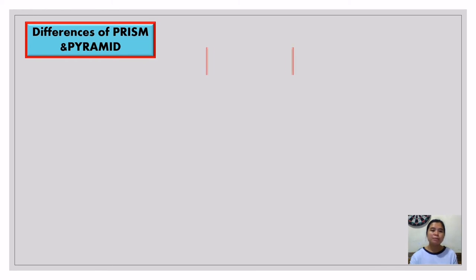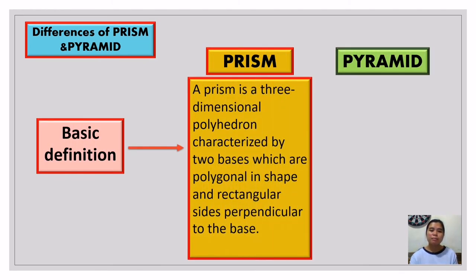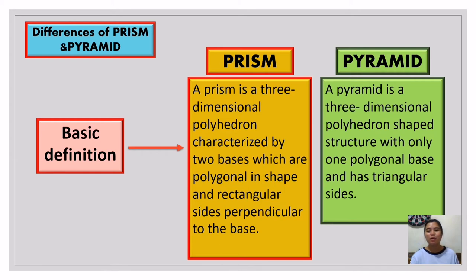To sum up the differences: a prism is a three-dimensional polyhedron characterized by two bases which are polygonal in shape, and rectangular sides perpendicular to the base — its base must be a polygon, not circular or curved in shape. A pyramid is a three-dimensional polyhedron with only one polygonal base and triangular sides. A pyramid has one base and its sides are triangular in shape.